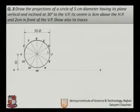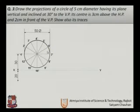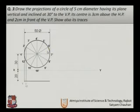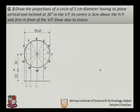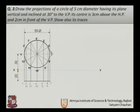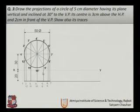To obtain the front view, get the projection of the circle. In the first step, the top view will be a line. By drawing the projection of each point, we obtain points 1 to 12 on the top view. This completes the first step.